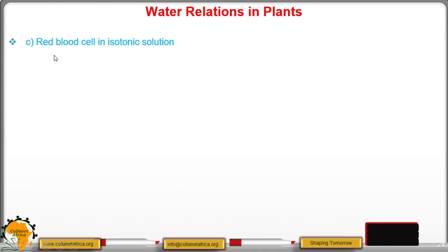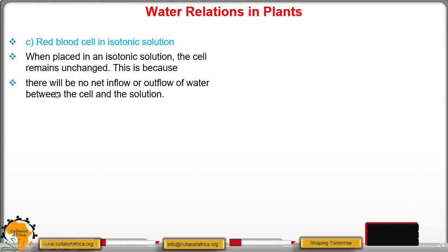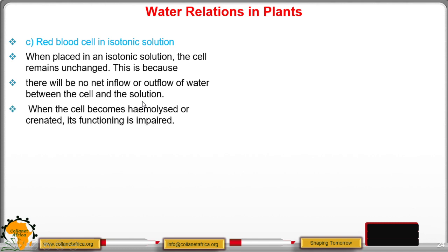What will happen if you place a red blood cell in an isotonic solution? Remember, an isotonic solution has the same concentration as that of the cell. So when placed in an isotonic solution, the cell remains unchanged, because there will be no net inflow or outflow of water between the cell and the solution, due to the concentrations being the same.